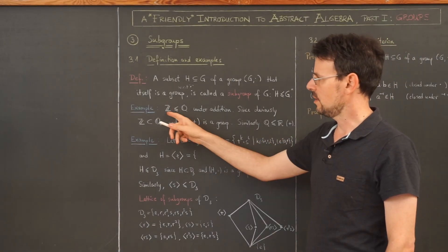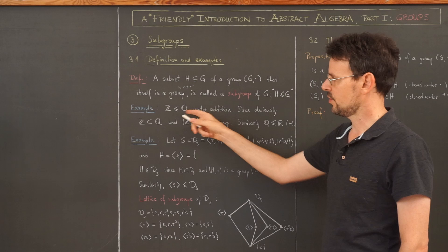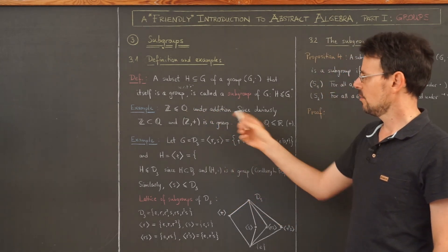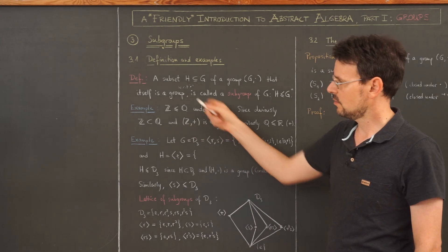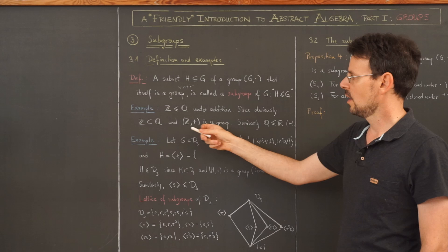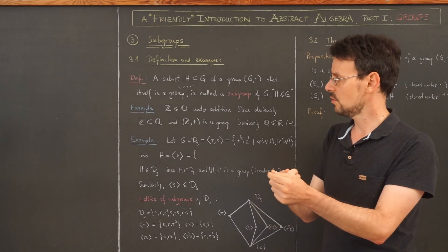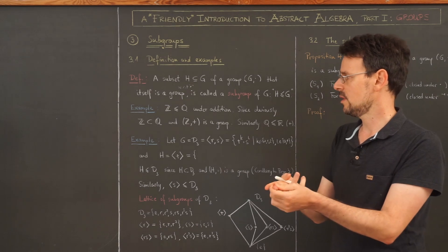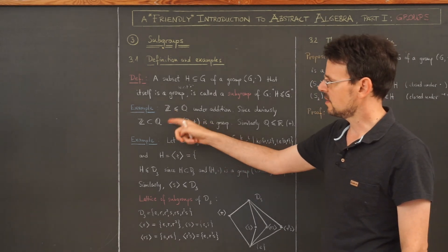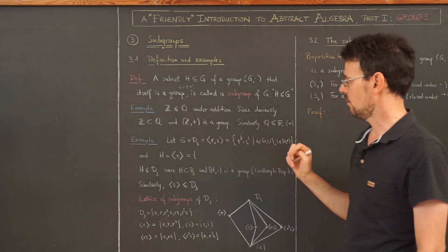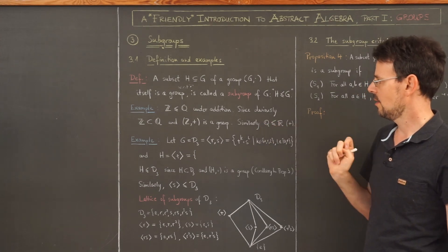A simple example: the integers are a subgroup of the rational numbers when the operation is addition. Obviously the integers are a subset of the rationals, and the integers with respect to addition form a group: they are closed under addition, addition is associative, there is a neutral element namely 0, and every integer has an inverse with respect to addition, namely its negative. So we have the integers as a subgroup of the rationals, and similarly the rationals are a subgroup of the reals under addition.